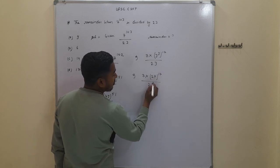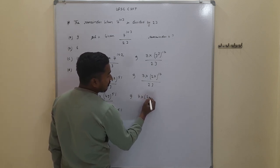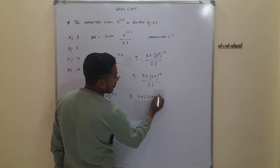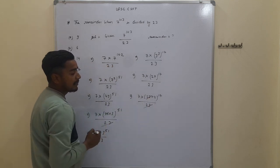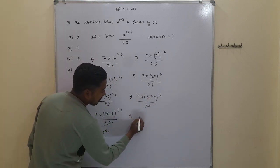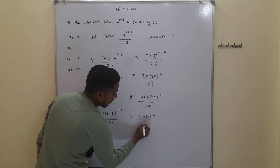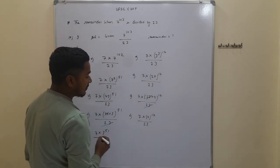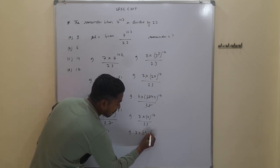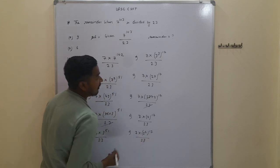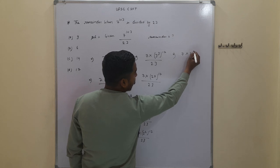Since 3 cubed is 27, this becomes 7 into 27 to the power of 17, divided by 23. Now 27 is written as 23 plus 4, so we have 7 into (23 + 4) to the power of 17, divided by 23. The 23 cancels out with remainder 0, giving us 7 into 4 to the power of 17, upon 23. Since 4 is 2 squared, this becomes 7 into 2 to the power of 34.